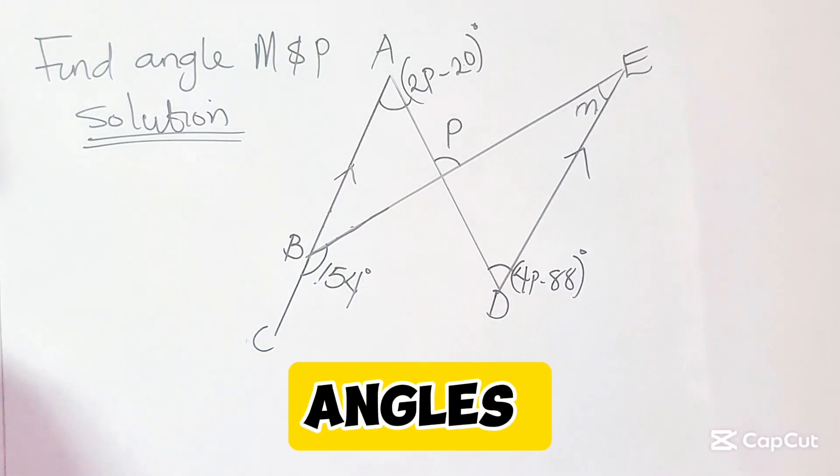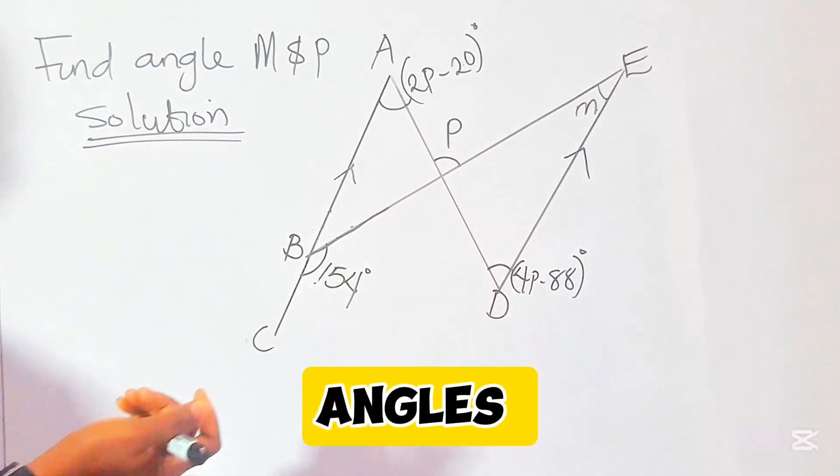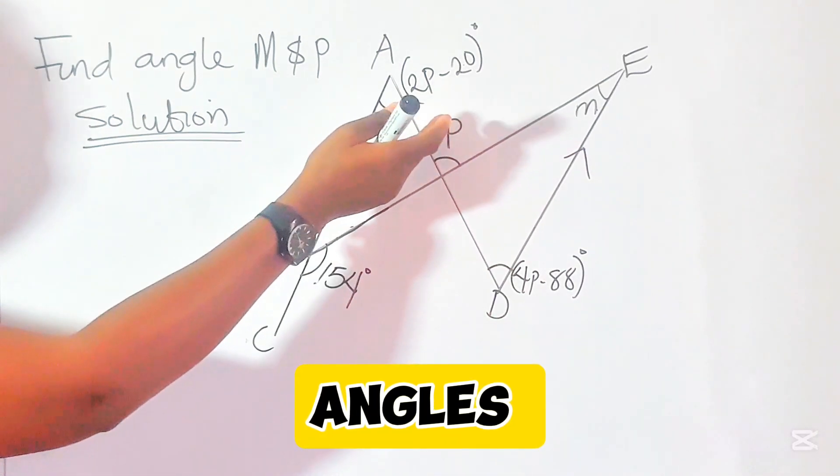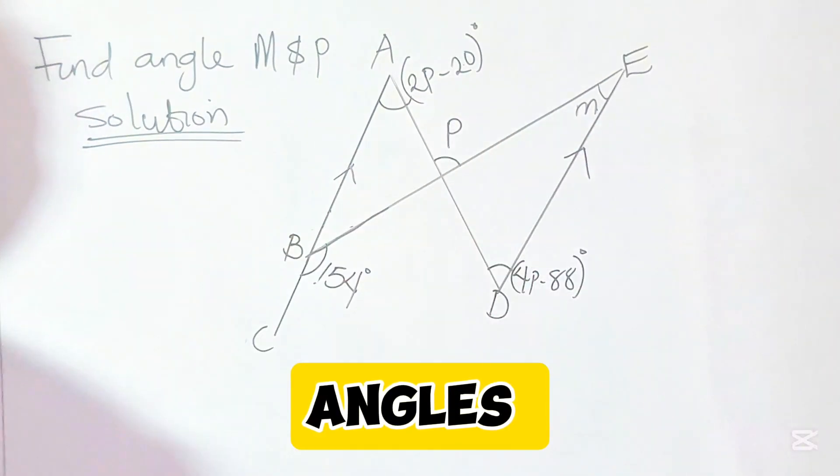Hello and welcome to MathEasy. Let's solve for the missing angles in this geometric figure. We have to find angle P and angle M.